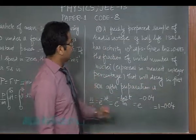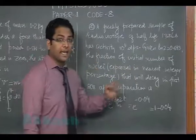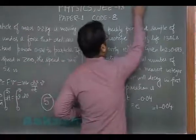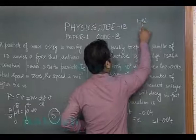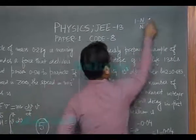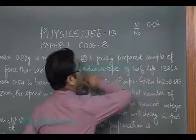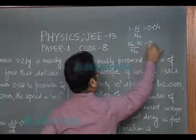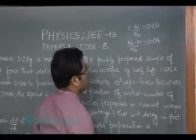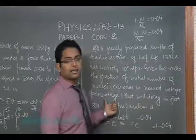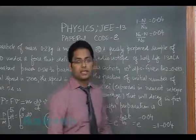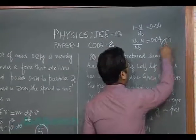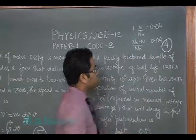But the question says the fraction of number of nuclei that has decayed. n is the number of nuclei remaining, so quite obviously 1 - n/n₀ is going to be 0.04. So (n₀ - n)/n₀ is going to be 0.04, and we require the answer in percentage. Once we multiply this, that's going to give us 4 percent. So the correct option for answer number 20, the integer is 4.